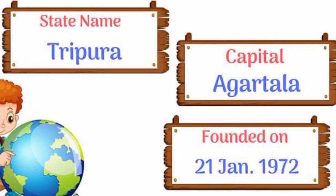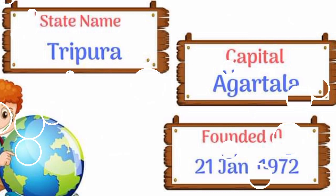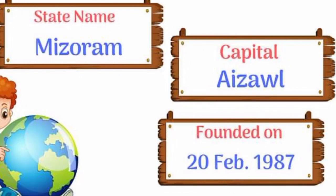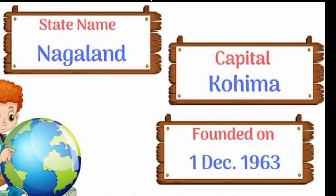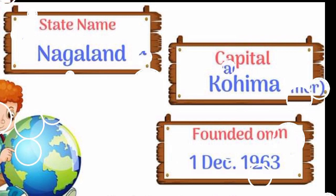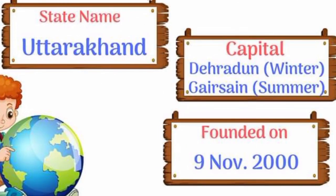Tripura — Agartala. Mizoram — Aizawl. Nagaland — Kohima. Uttarakhand — Dehradun.